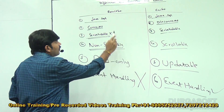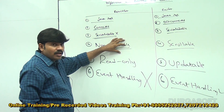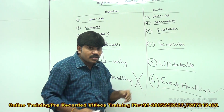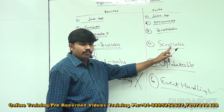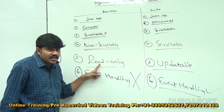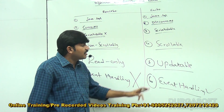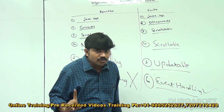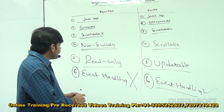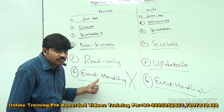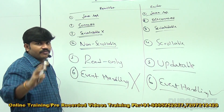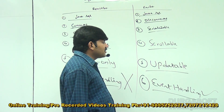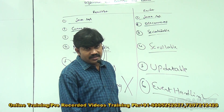By default, every ResultSet is non-scrollable — you can move only in the forward direction. But every RowSet including JdbcRowSet is scrollable — you can move forward, backward, or jump to any required position. By default, every ResultSet is read-only and you can't perform any update operation. But by default, RowSet is updatable and those updates are automatically reflected in the database. Event handling mechanism is not available for ResultSet, but it is available for RowSet.